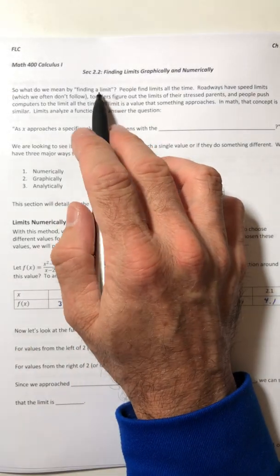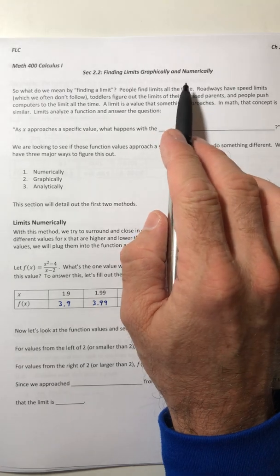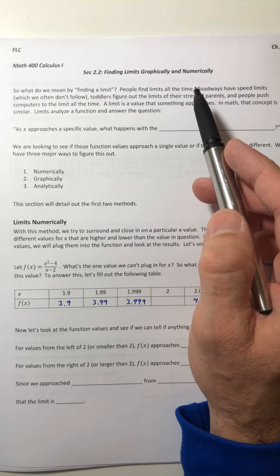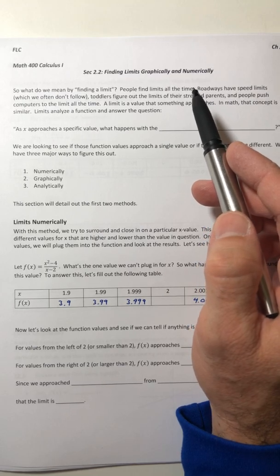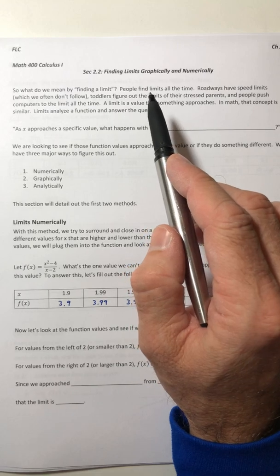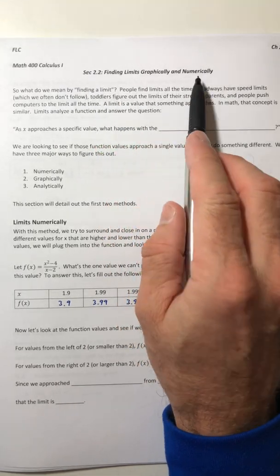Some of you might have already seen this stuff before when we're talking about limits. This whole chapter is going to be on limits. Limits is the first major concept you see in calculus. In calculus, there's only three: limits, derivatives, and integrals. So chapter 2 is all about limits.